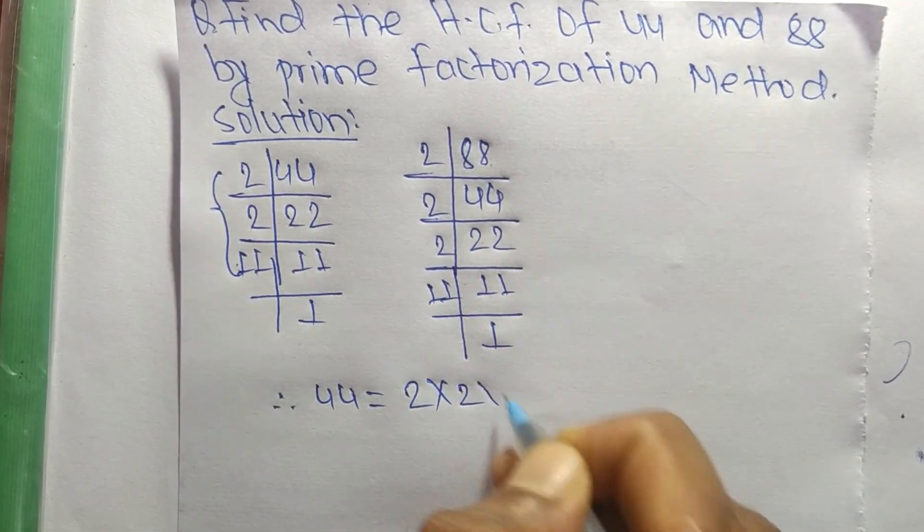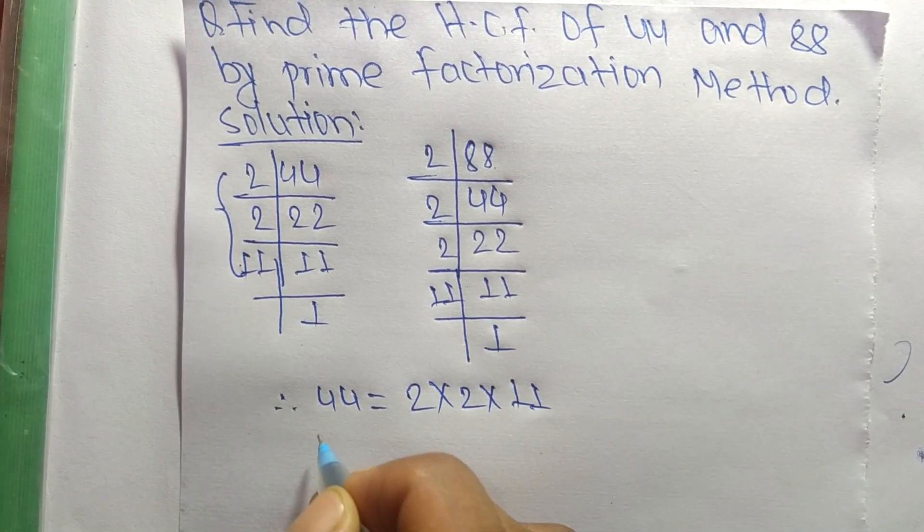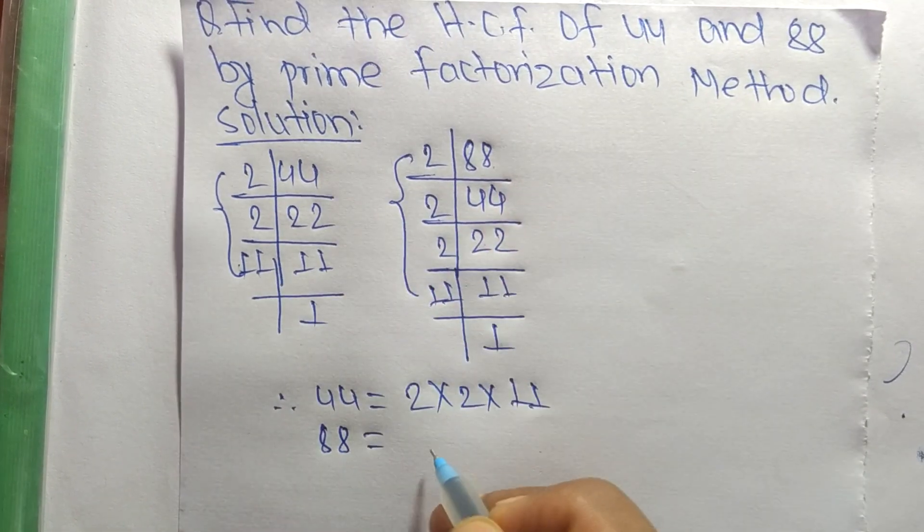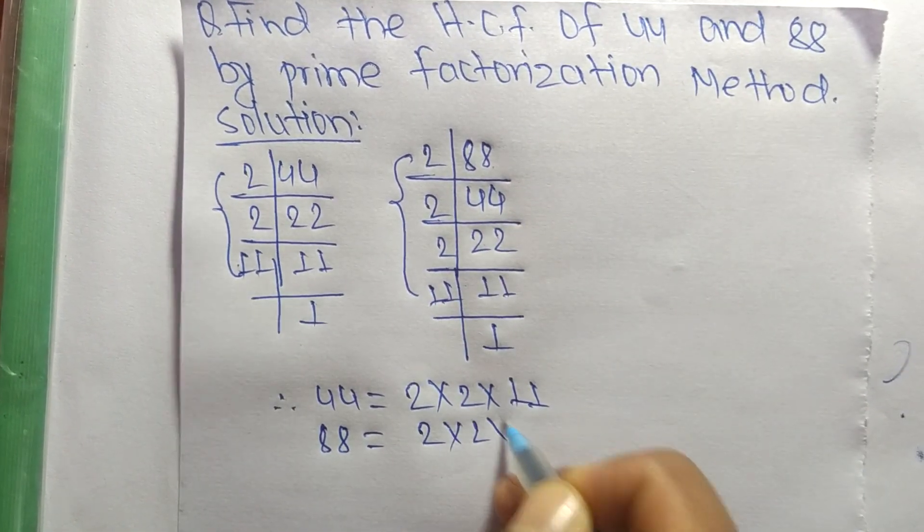88 is equal to 2 times 2 times 2 times 11.